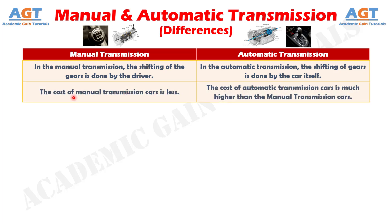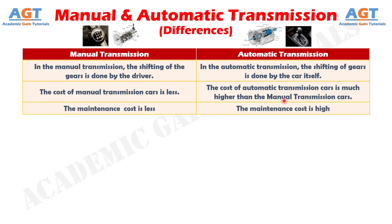Number 2. The cost of manual transmission cars is less, whereas the cost of automatic transmission cars is much higher than the manual transmission cars. Number 3. The maintenance cost of manual transmission cars is less, whereas the maintenance cost of automatic transmission cars is high.